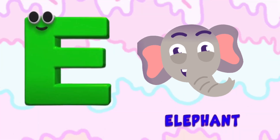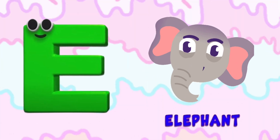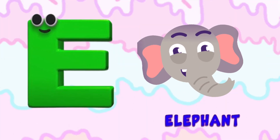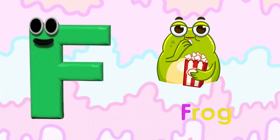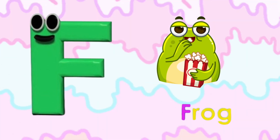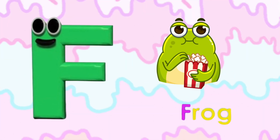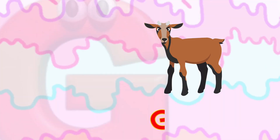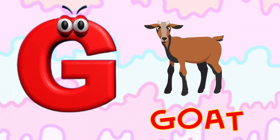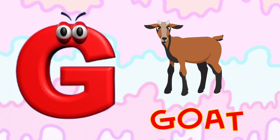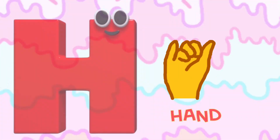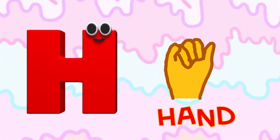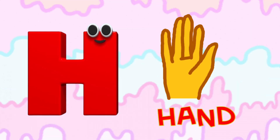E is for Elephant. E-E-Elephant. F is for Frog. F-F-Frog. G is for Goat. G-G-Goat. H is for Hand. H-H-Hand.